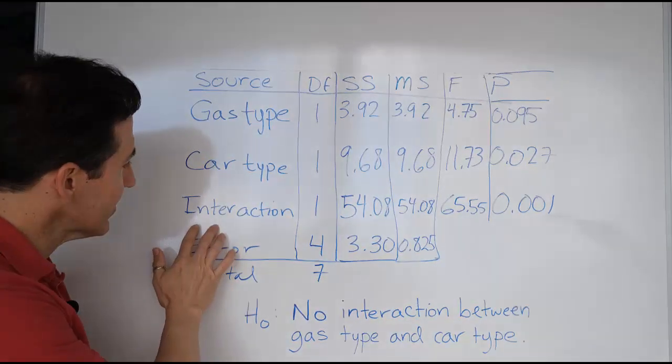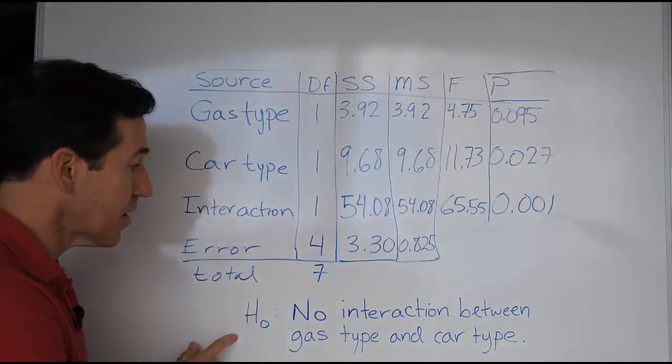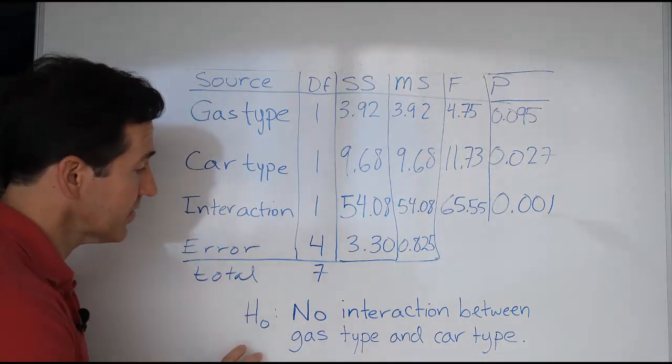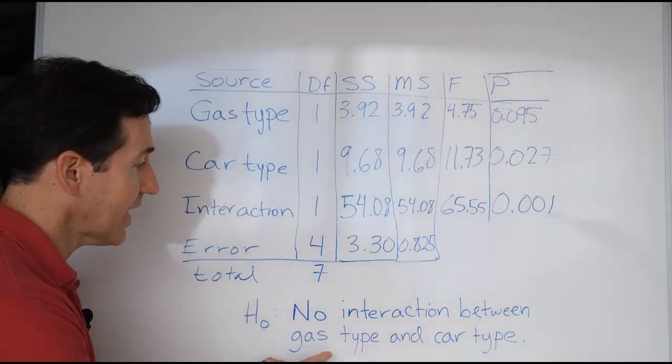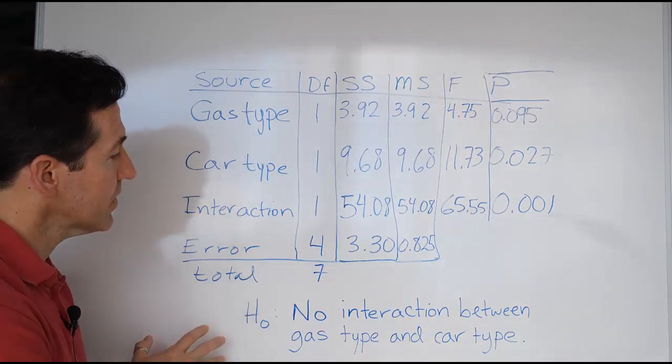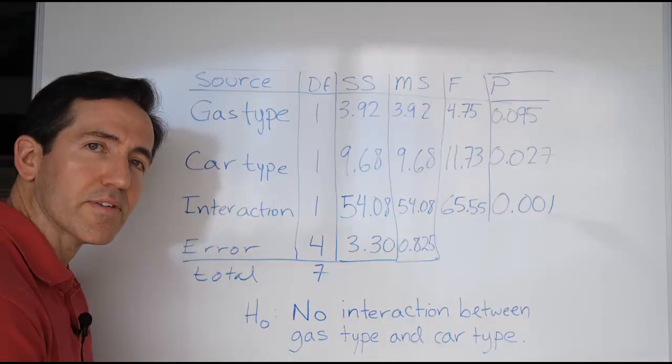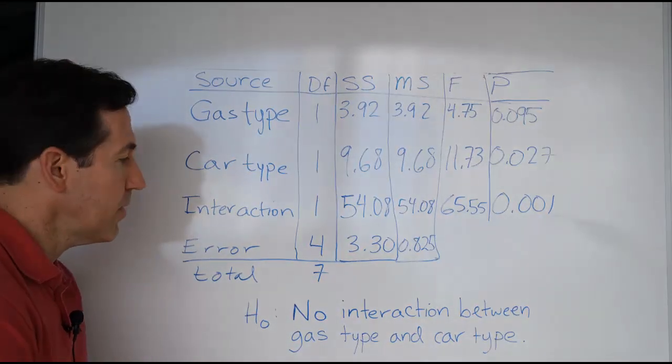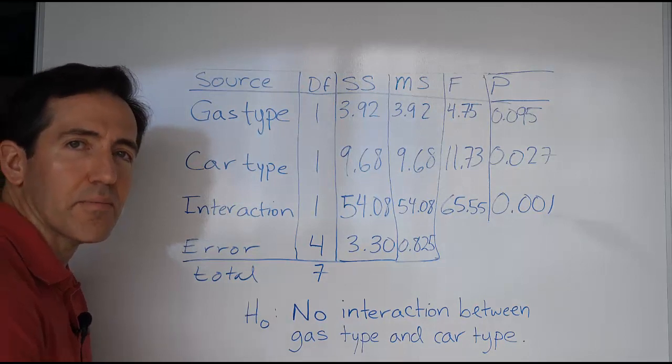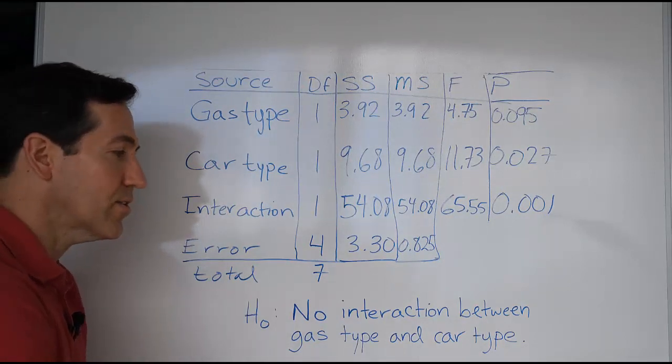Either way, remember when you're testing interaction, you're testing the null hypothesis that there's no interaction. In this case, there'd be no interaction between gas type and car type, and what they were looking at is miles per gallon performance. So if the car performed better with a certain type of gas in terms of miles per gallon usage.